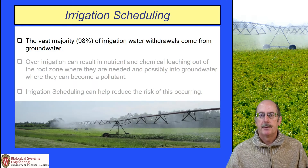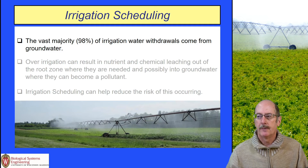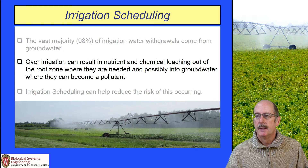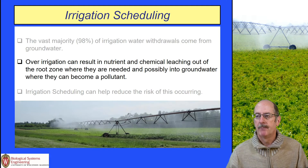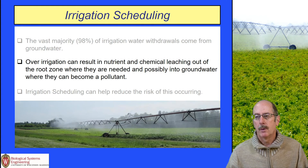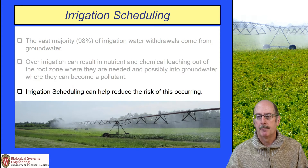About 98% of the irrigation water withdrawals in Wisconsin come from groundwater, so it's a very important source. Over-irrigating can result in nutrient and chemical losses or leaching out of the root zone where they're needed by the plants, and can also possibly contaminate groundwater. It's important to manage root zone water content to minimize this to the greatest extent possible.